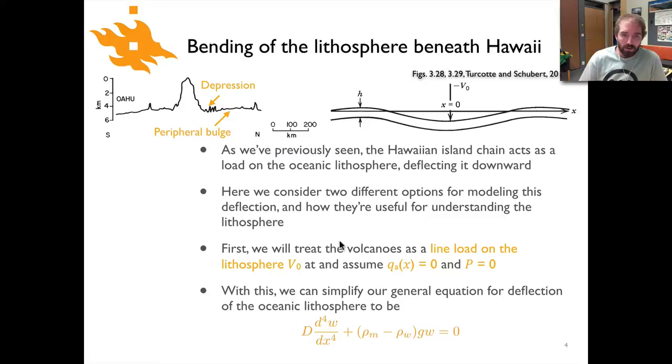And the treatment that we're going to do is basically to consider the Hawaiian islands as a line load minus v naught at position x equals zero and assume that there's no load along the length of the elastic plate and there's no axial or longitudinal force. So in other words q is equal to zero and p equals zero which resulted in our sort of simplified general equation for deflection of the oceanic lithosphere that is shown down here before and something we saw in the previous video lecture.